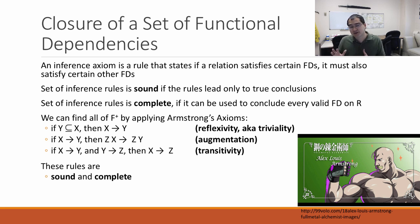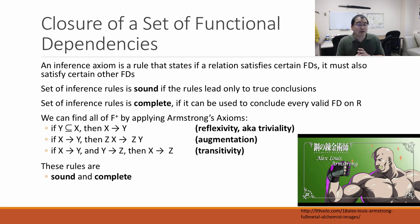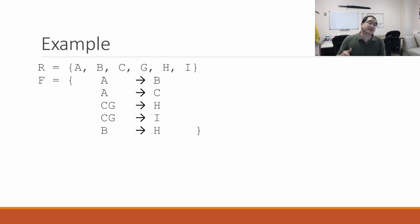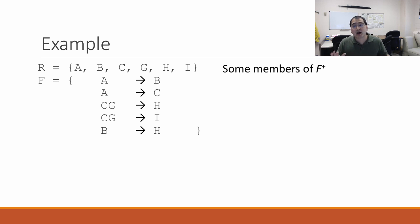These three rules are not too complicated, and they are both sound and complete — meaning by using these rules, you can build every possible functional dependency within a particular relation. So let's work through an example. We have a relation with attributes a, b, c, g, h, i. Given functional dependencies like a→bc, a→c, and so on, what are some members of the closure of F? Does a functionally determine h? Yes — we know a functionally determines b, and b functionally determines h, so by transitivity, a functionally determines h.